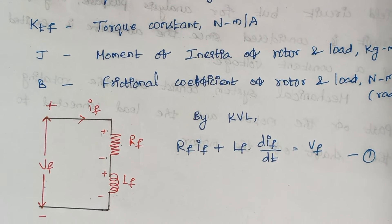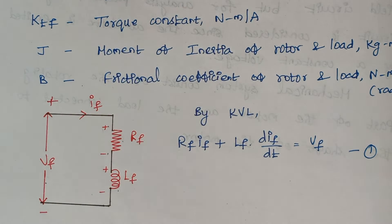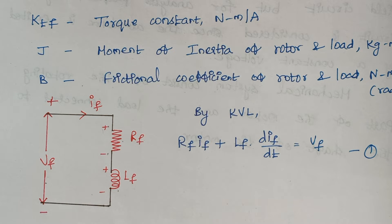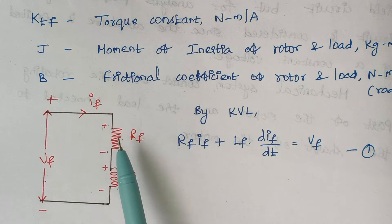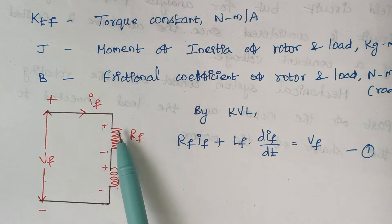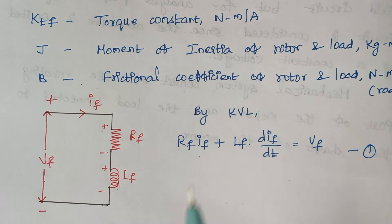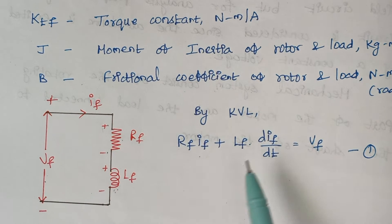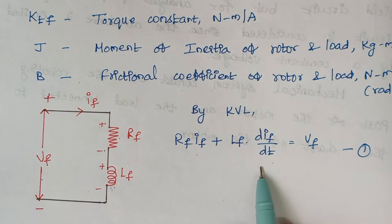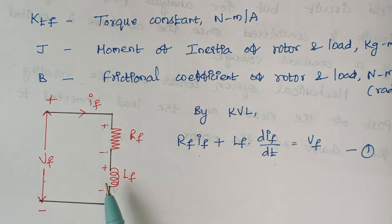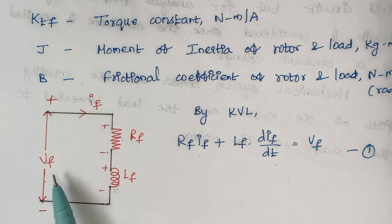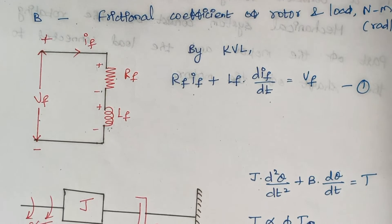First, we analyze the field circuit. Applying Kirchhoff's Voltage Law: the sum of voltage drops equals the sum of voltage rises. The voltage drop across the resistor is RF·IF, and across the inductance is LF·(dIF/dt). The voltage rise is VF, which is the supply voltage. This gives us Equation 1: VF = RF·IF + LF·(dIF/dt).